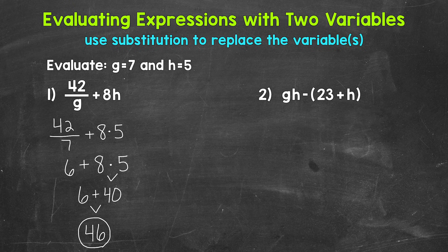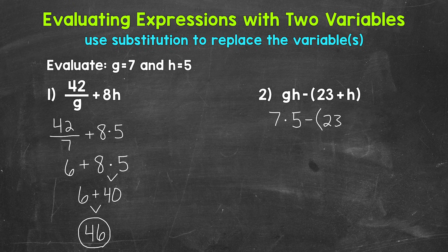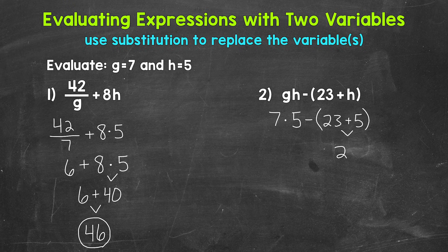Let's move on to number 2, where we have gh — so g times h — minus, and then in parentheses, 23 plus h. Now we need to go through the order of operations to evaluate this expression. Do we have any parentheses? Yes, so that is priority number 1. Let's start there: we have 23 plus 5, which equals 28.